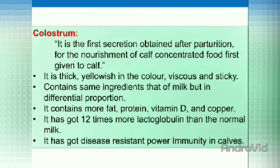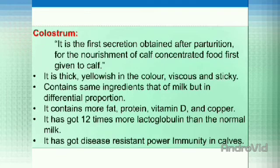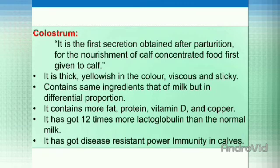Next is colostrum. The definition of colostrum is: it is the first secretion obtained after parturition for the nourishment of the calf and is the concentrated food first given to the calf. It is thick, yellowish in color, viscous, and sticky. It contains the same ingredients as milk but in different proportions — it contains more fat, protein, vitamin D, and copper. It has 12 times more lactoglobulin than normal milk and has disease-resistant immunity power in calves. The colostrum contains antibodies that give immunity power to calves.